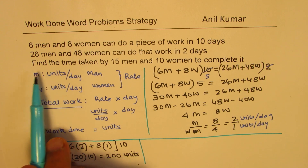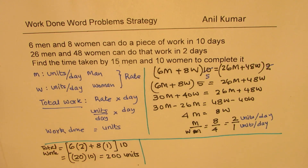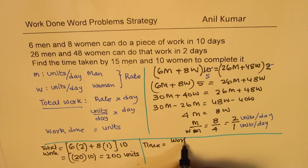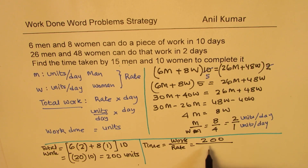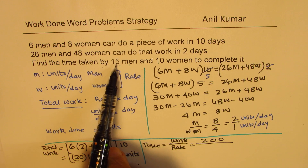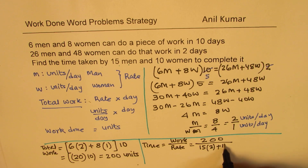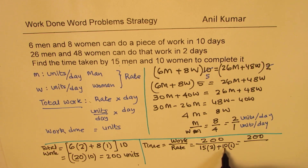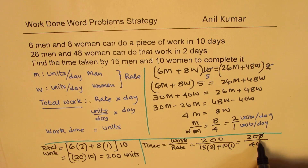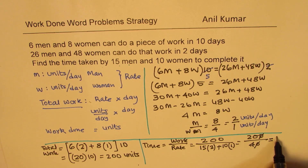What do we need to find? We need to find the time taken by 15 men and 10 women. Time equals total work over rate. Total work is 200. 15 men will work at the rate of two units per day, plus 10 women working at one unit per day. So we get 200 divided by 30 plus 10, which is 40. That gives us 200 divided by 40, which simplifies to 5 days.